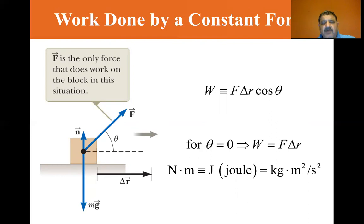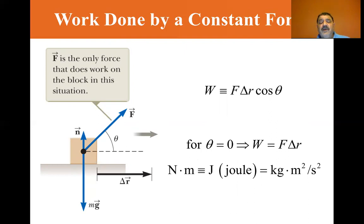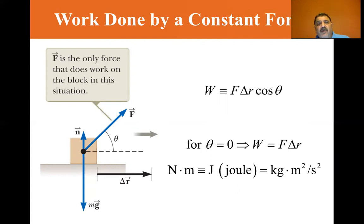The units of work are Newton-meters. If you have a force in Newtons and a displacement in meters, Newton-meters equals joules. One Newton moving an object one meter equals one joule of work.